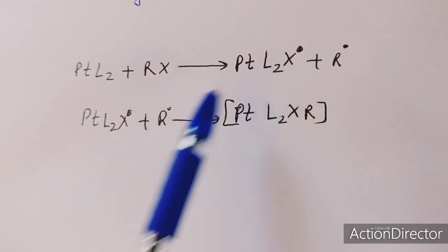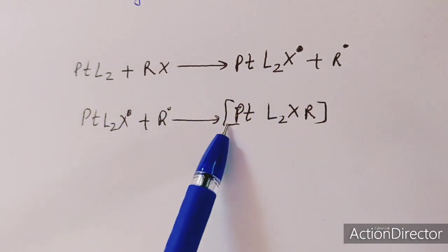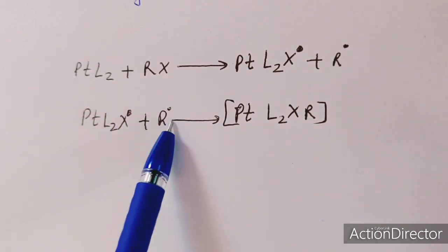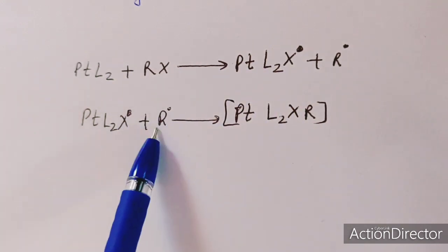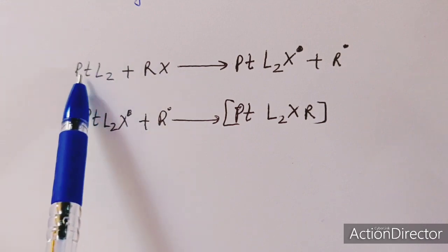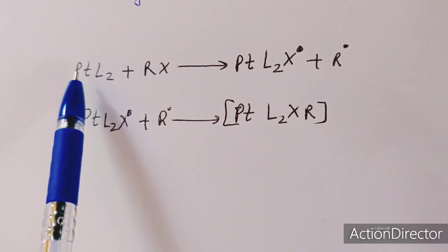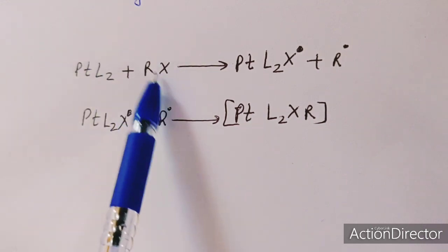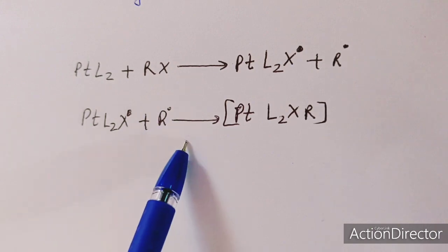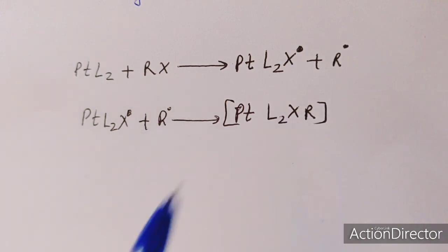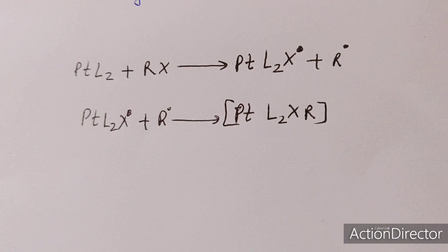This is a second-order reaction. In the first step, the two free radicals formed during electron donation from the metal center to the organohalide react fast to form the product. The mechanism depends upon two kinds of factors.